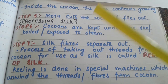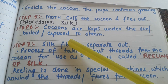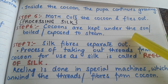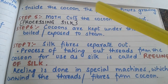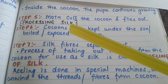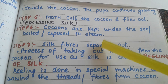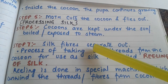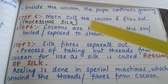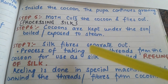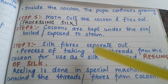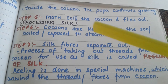Now let us understand the processing of silk. We take a pile of cocoons and keep them under the sun, or boil them, or expose them to steam. This causes the silk fibers to get separated from the cocoons. The process of taking out the threads from the cocoon so that we can use them as silk is known as reeling of the silk.